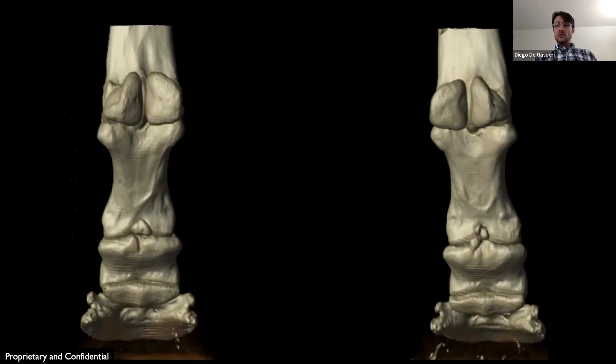Arthroscopy was performed in the palmar pouch on the right front pastern joint, and two of these three large bone fragments were identified. We were able to visualize only two of those fragments. Debridement was performed, and the horse did very well after surgery. Now he's back in training and sound.